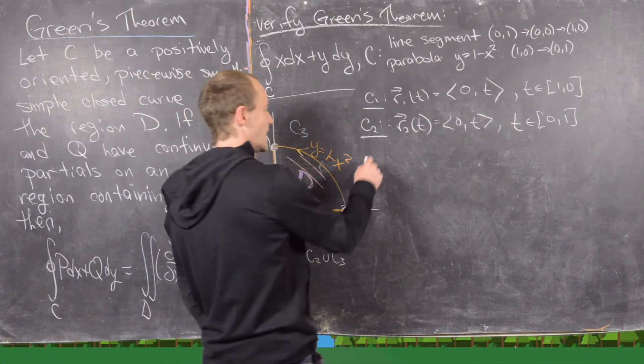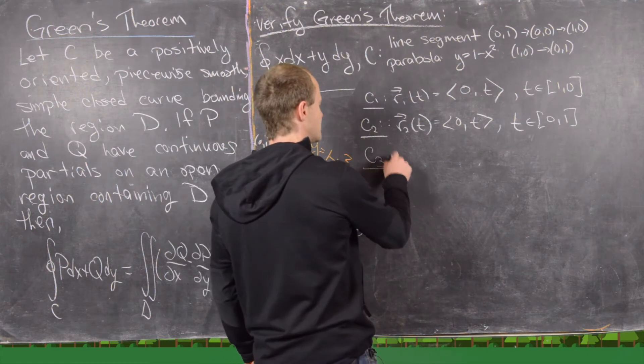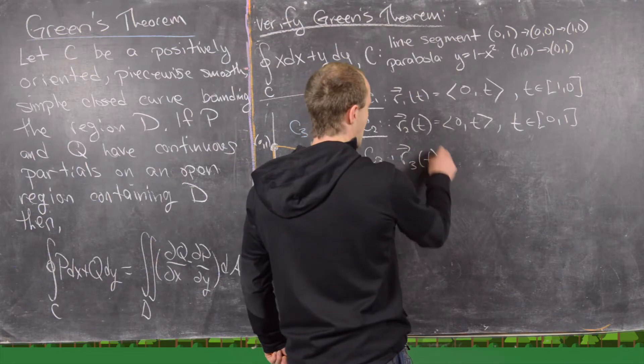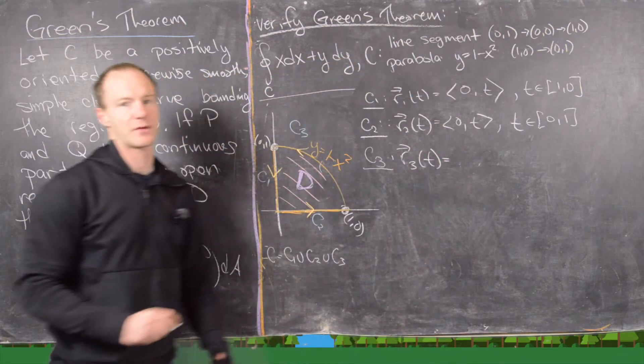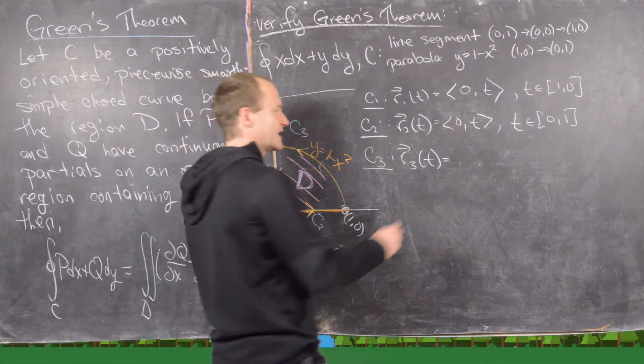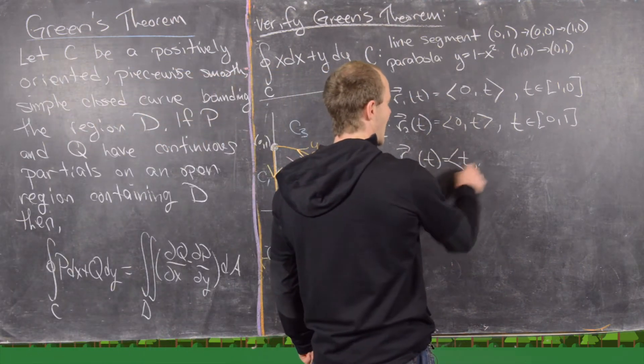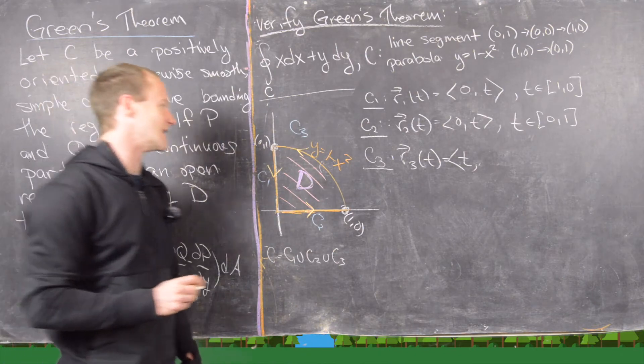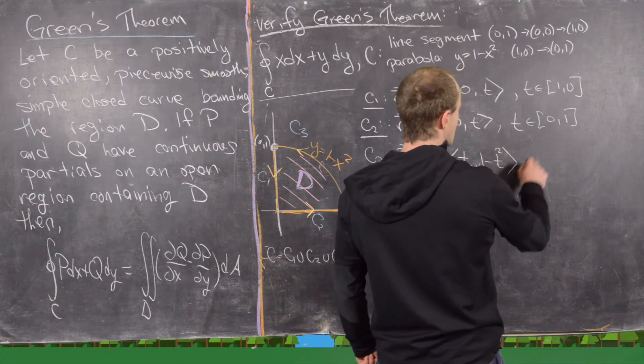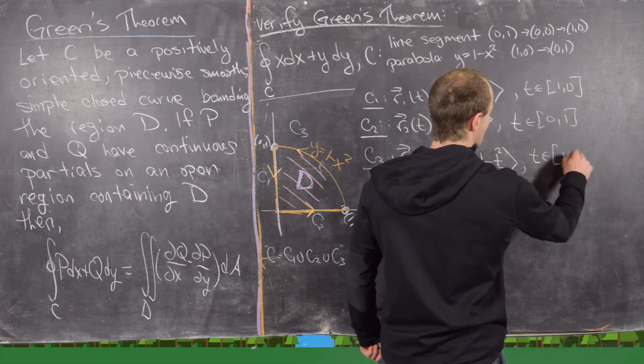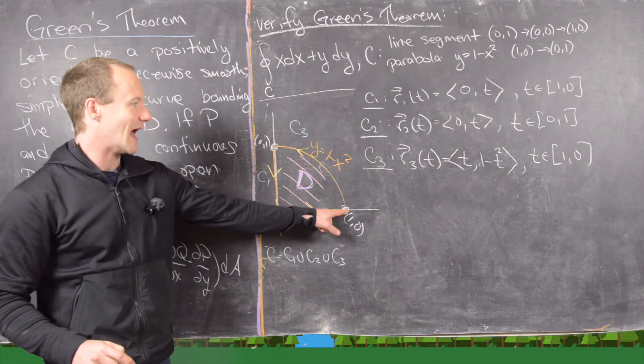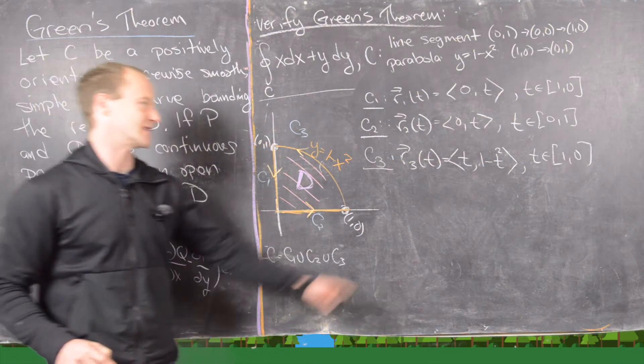Okay, now let's go ahead and look at C3. So notice along C3, we are on this parabola, and we have an equation for the parabola. That equation is y equals 1 minus x squared. So we can just go ahead and let the x component of this parametrization be T, which makes the y component 1 minus T squared, and then we need to run time in reverse again. So we need to go 1 to 0 because we're starting here at x equals 1 and we're ending at x equals 0.